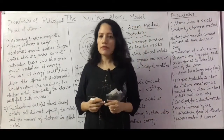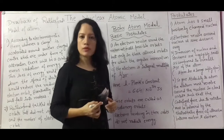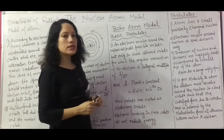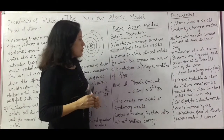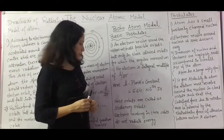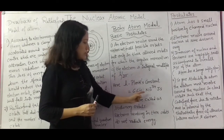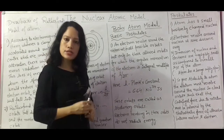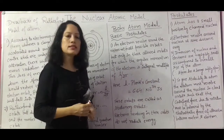Bohr worked on the drawbacks of the Rutherford model, took the basis from the same model, and gave his own postulates. According to the Bohr atom model, an electron revolves around the nucleus not in all possible orbits but only in those allowed orbits for which the angular momentum of the electron is an integral multiple of h upon 2π. Here h is Planck's constant with a value of 6.64 × 10⁻³⁴ joule second. He named these orbits as stationary orbits, and electrons revolving in these stationary orbits do not radiate any energy.